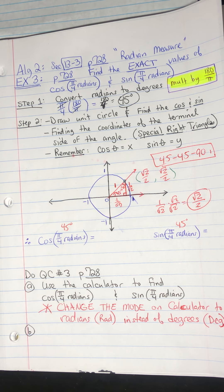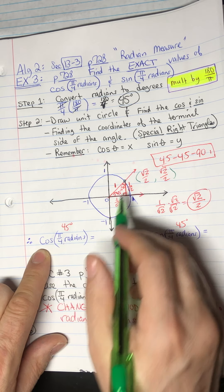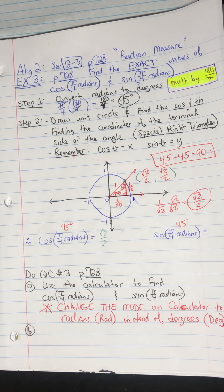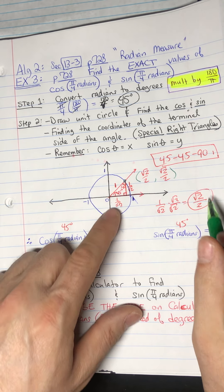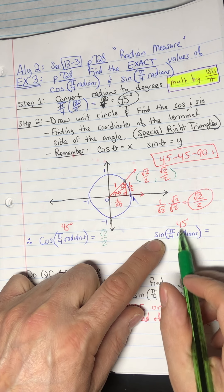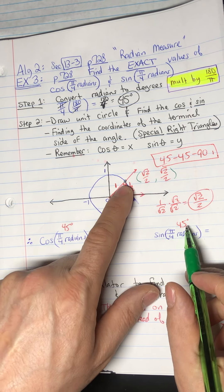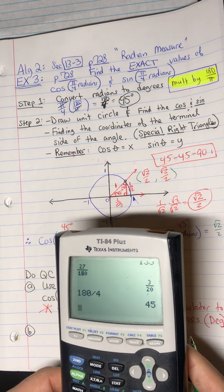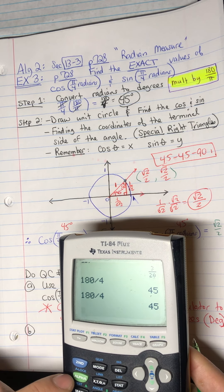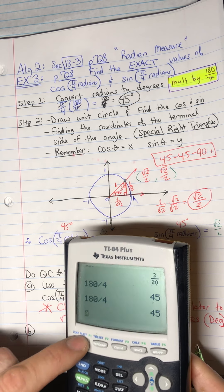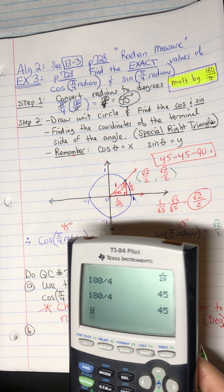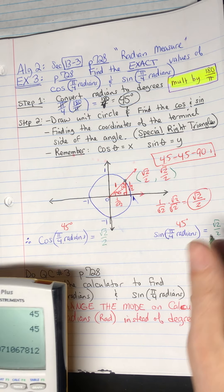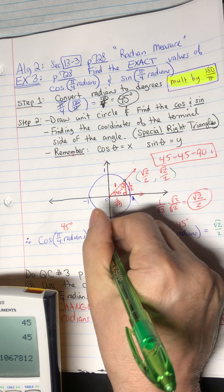The cosine of an angle is the x-coordinate of the point on the unit circle, which is square root of 2 over 2. The sine of pi over 4 radians equals the y-coordinate of that same point, also square root of 2 over 2. The decimal equivalent is approximately 0.707 — that's the exact answer verified on the calculator.